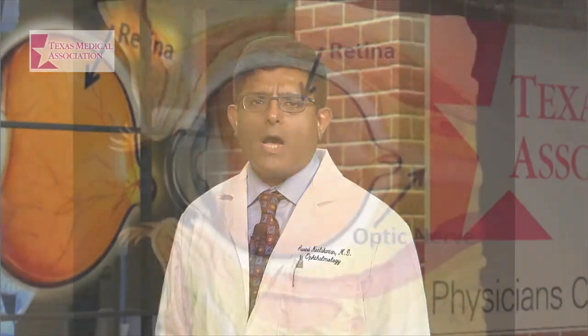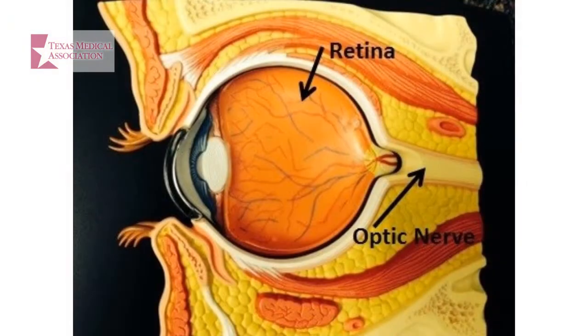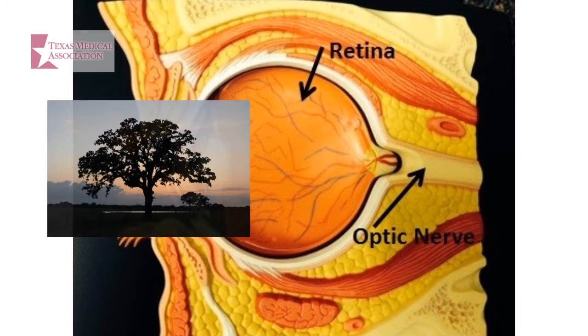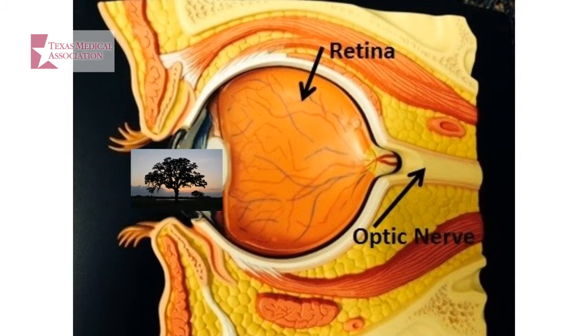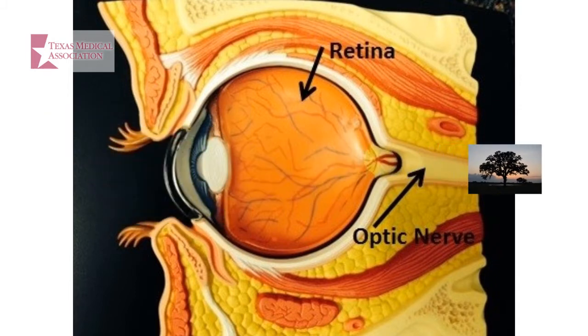The eye is like a camera — the retina is the tissue that's the film behind, and the optic nerve is the cable that transmits the image from the retina to the brain.